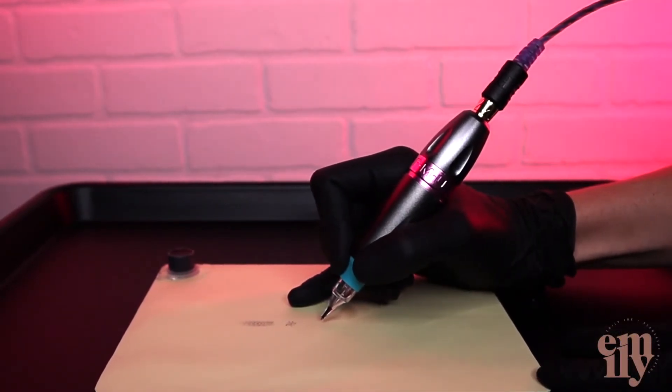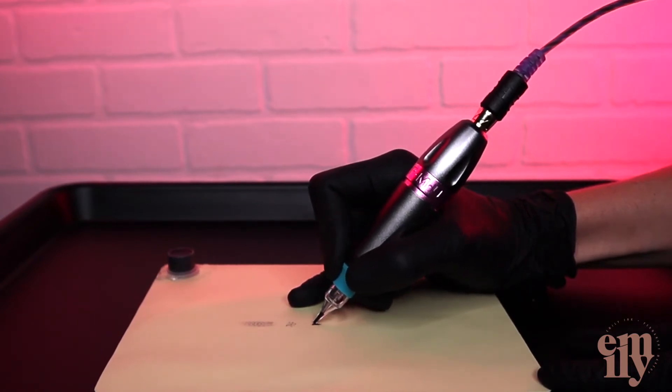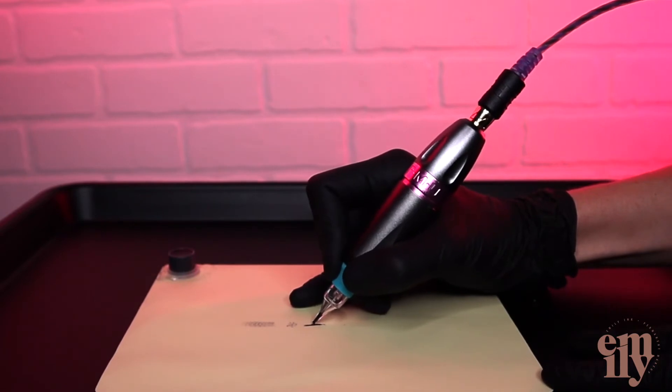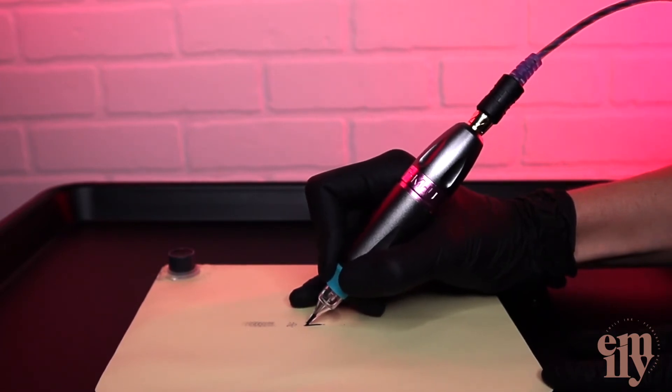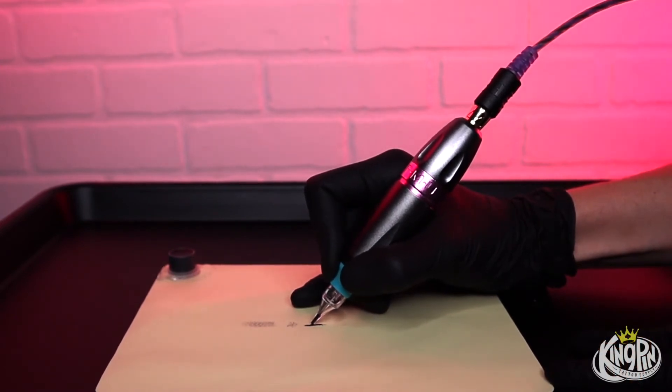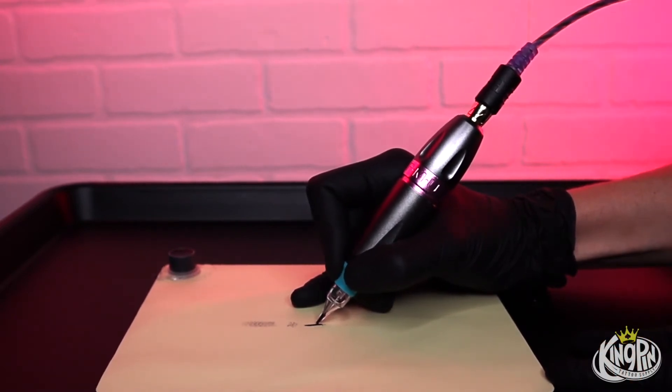You could do something called shoveling. This is moving the machine back and forth in the skin in a shoveling motion. This is really going to pack a lot of pigment into the skin and make your service area solid.